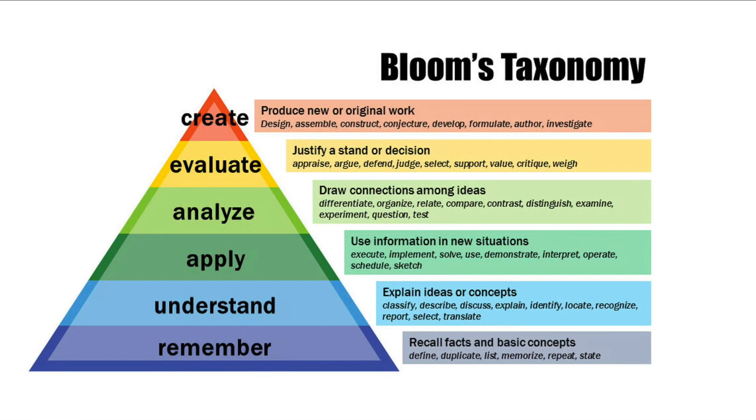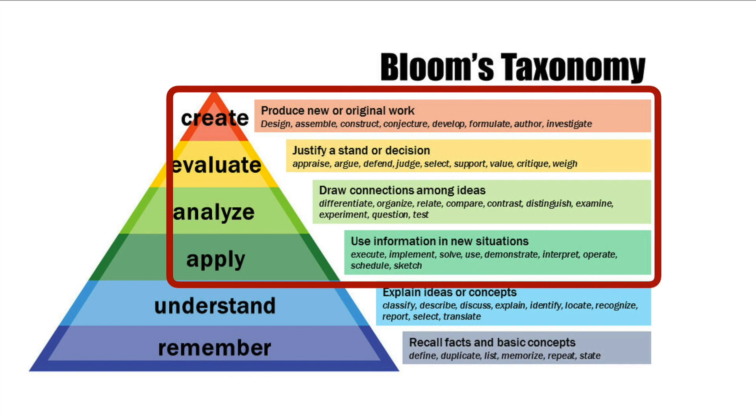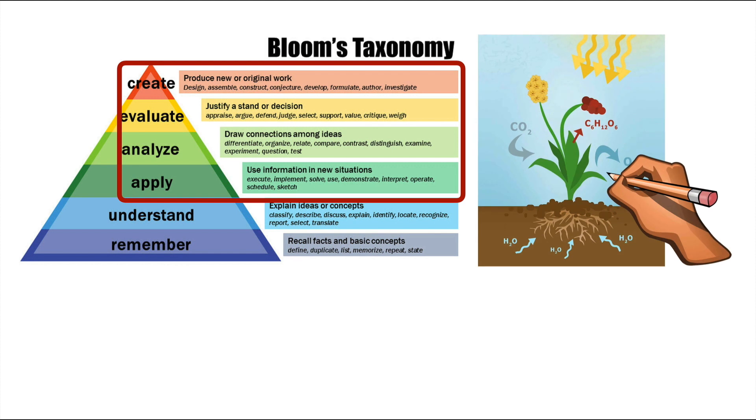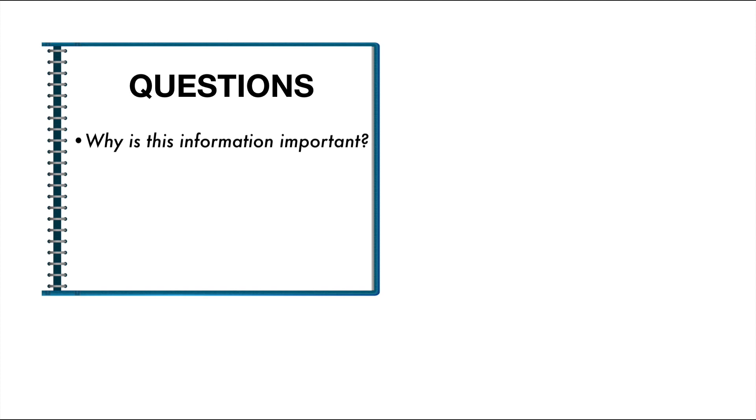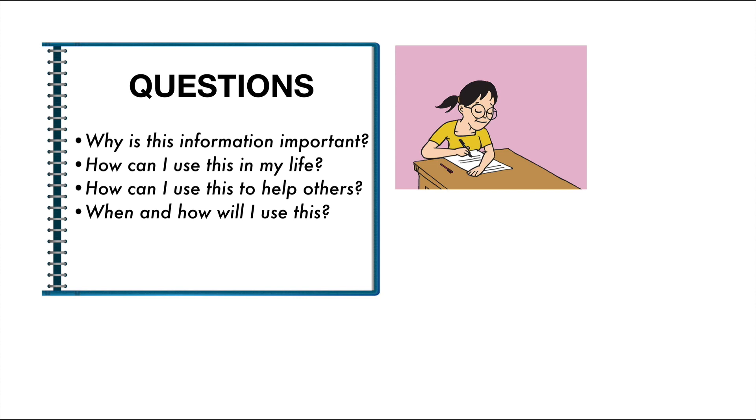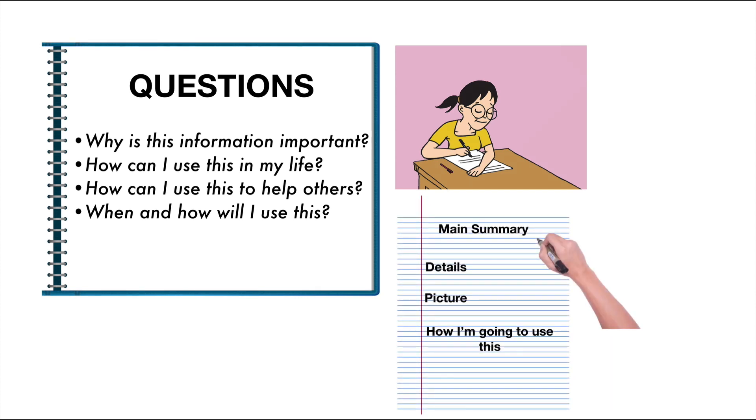Then use higher-order thinking, which pushes your mind to understand information at a deeper level. You might draw an image to help you remember it, or create diagrams to compare and contrast. Show a process, depict cause and effect relationships, and so on. Then write why this information is important, and how you can use it in your life, or to help others. Take it one step further, and write down when and how you're going to use it. Then quiz yourself on what the video was about. Turn your notes over to a blank page, and write your main summary explanation as best as you can recall from memory. Include any key details, redraw the picture, and then explain how you're going to use it.